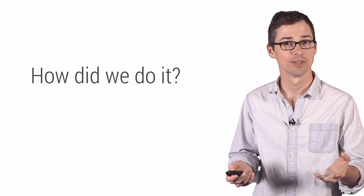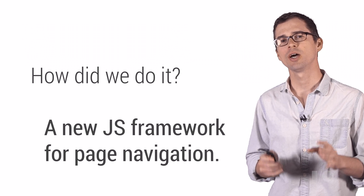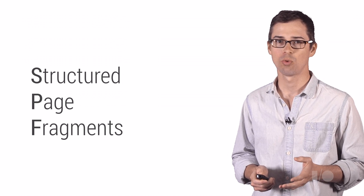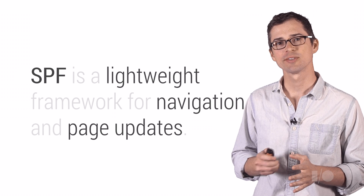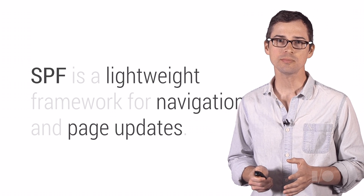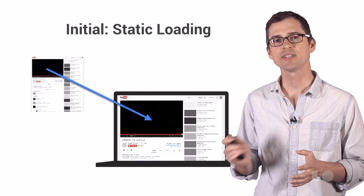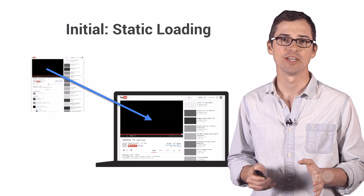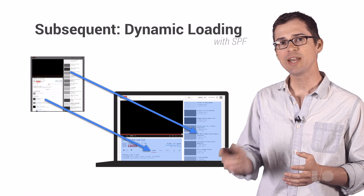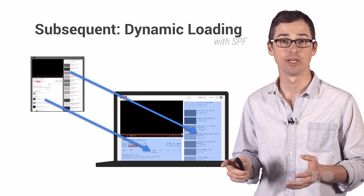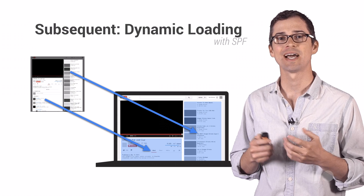So how did we do it? We built a new JavaScript framework for page navigation. Structured Page Fragments, or SPF for short, is a lightweight framework that handles navigations and updates to page sections. When someone first arrives at the site, the content is sent from the server and rendered normally — we call this static navigation. But when going to the next page, only document fragments are sent, and page sections are updated accordingly. We call this dynamic navigation.